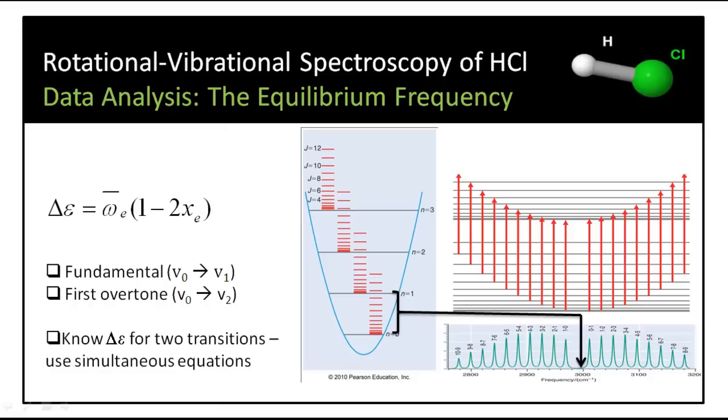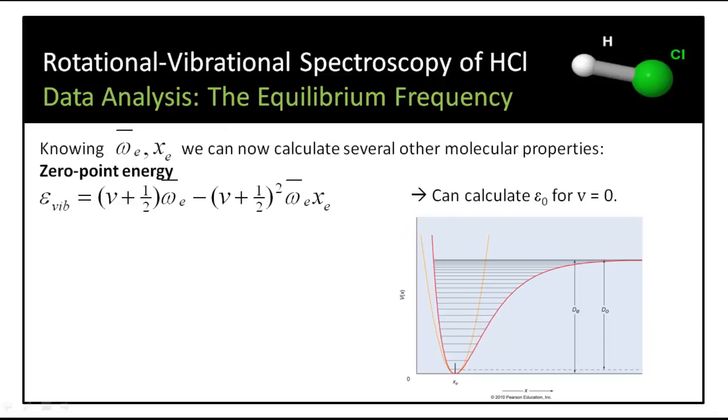If we look closely at our experimental spectrum, which you should have when you finish the experiment, at approximately double the value of the fundamental absorption, we should see a much weaker series of absorptions corresponding to the 0 to 2 vibrational bands. This is called the first overtone. Finding the center point here allows us to deduce a value for delta E for the two transitions, and hence again we can use simultaneous equations. Now we know these fundamental parameters, we can calculate a lot more information about HCl.